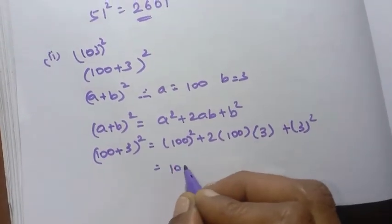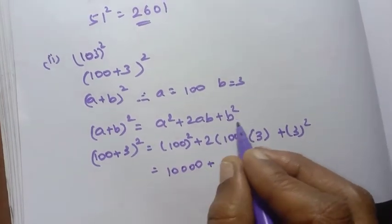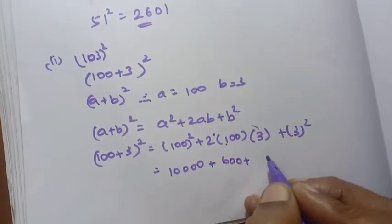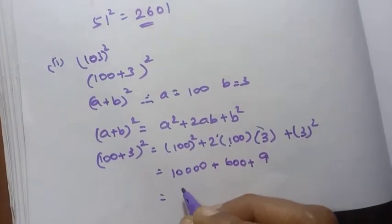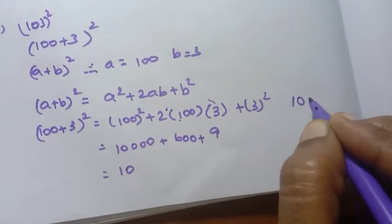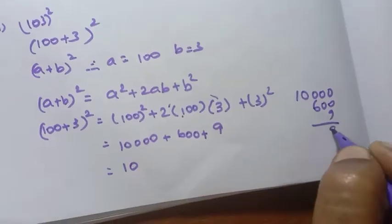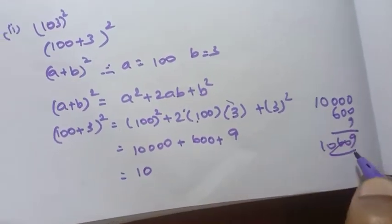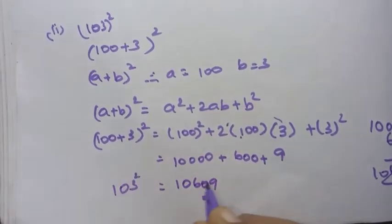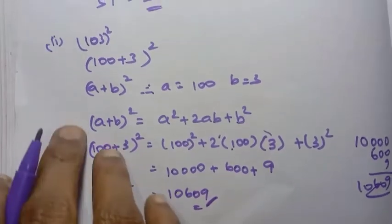So 100 into 100 is 10,000 — that is 4 zeros — plus 2 into 100 into 3. Two 3's are 6, and 6 into 100 is 600, plus 3 square which is 9. So the answer is 10,609. Therefore 103 square equals 10,609.